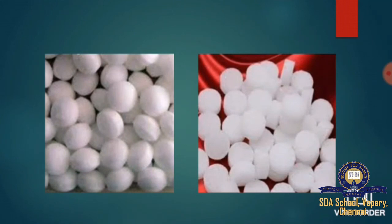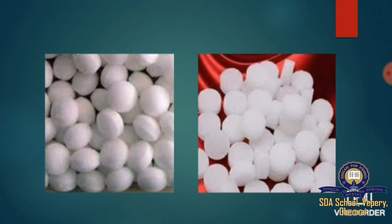To recap today's topic: we studied change in the state of matter, covering three types of interconversion — solid to liquid, liquid to gas, and solid to vapor. In the first type, heating solid gives liquid (melting). In the second, reheating liquid gives gas (vaporization). In the third, heating solid gives vapor directly without passing through liquid (sublimation). We also covered melting point, freezing point, vaporization, condensation, sublimation, and sublimate.